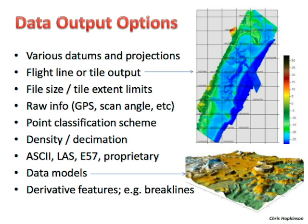You also need to decide on data models: do you want DEMs, DSMs, canopy models, or building models? And derivative features: do you want break lines, contours, wet areas, and other derivatives? The key question is whether to do these in-house or contract them out with the service provider, because it may be quicker and more cost-effective to get those derivatives at the point of delivery.